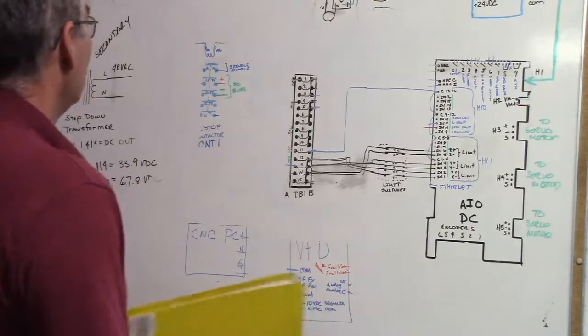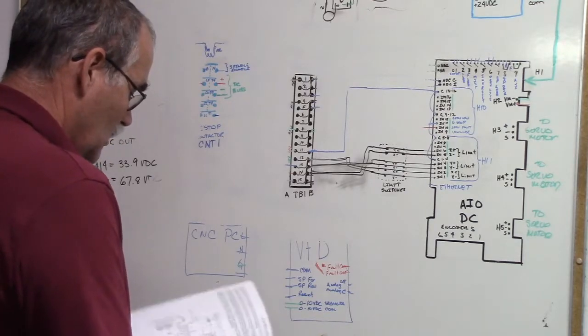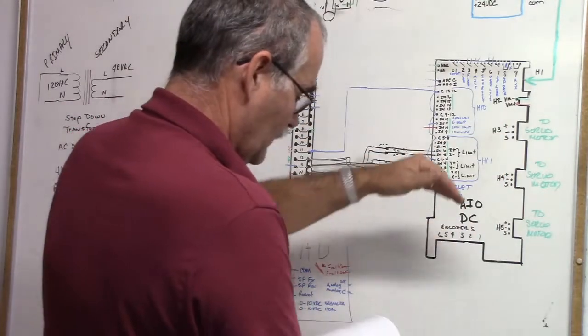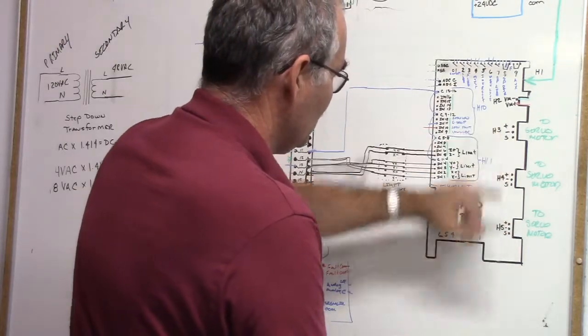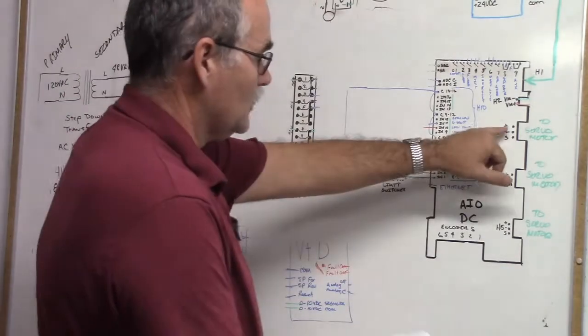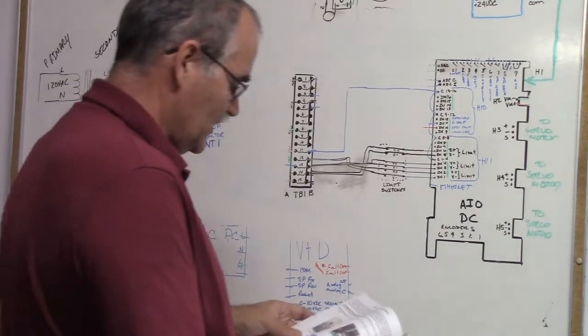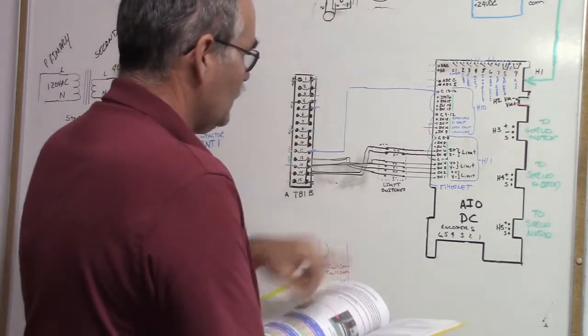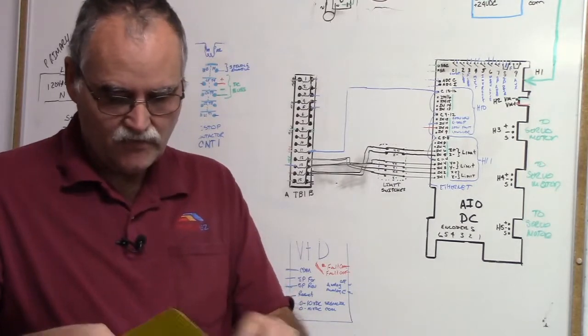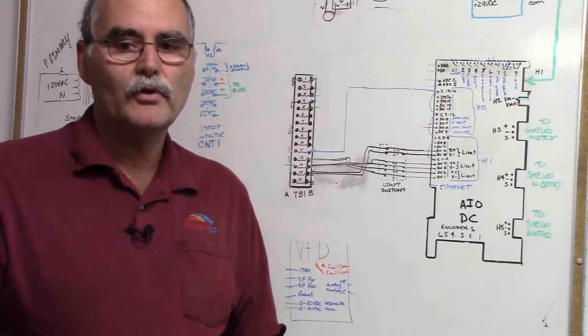I think that covers all the subsystems in the all-in-one DC. We've covered everything pretty well. We've talked about the coolant pump, wiring the spindle. Servo motors - basically you've got X, Y, Z. X is 1, 2, 3. Encoders get plugged into the encoder ports. That's pretty straightforward. These are marked positive, negative - you wire them that way. Setting current limiting - there's a set of DIP switches on the all-in-one DC. You need to know what the maximum stall current is on your servo motor.